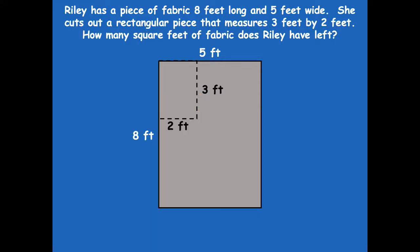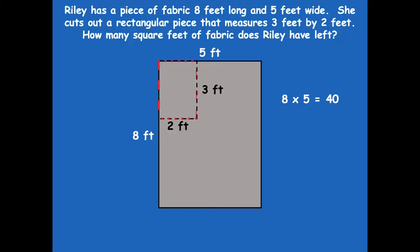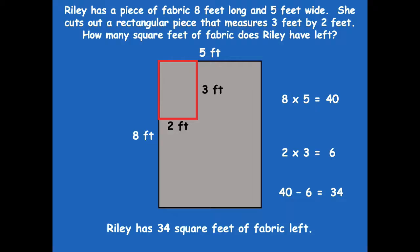Make sure you pause if you need more time. So here we're going to find the area of the whole large rectangle, which would be eight times five — those are my side lengths. Eight times five is 40. Now I need to find the area of the smaller rectangle, which would be two times three — those are my side lengths. Two times three is six. And now, what's the next step? I have to subtract. So I have to subtract six from 40, which would be 34. So Riley has 34 square feet of fabric left.